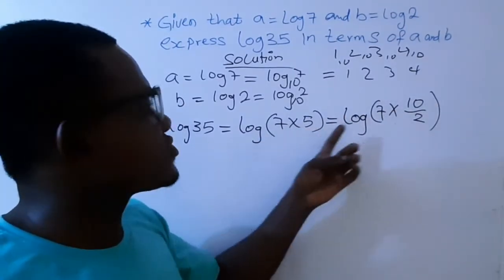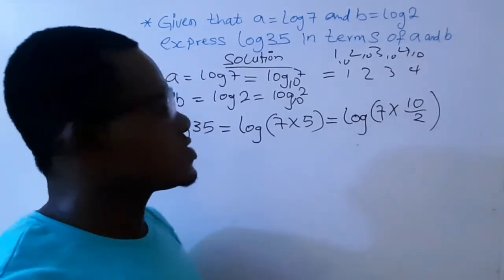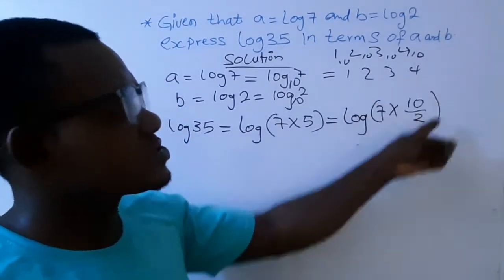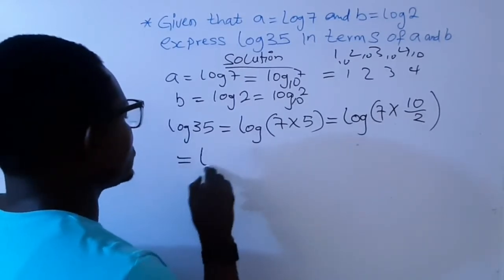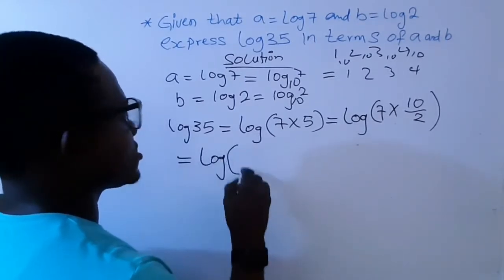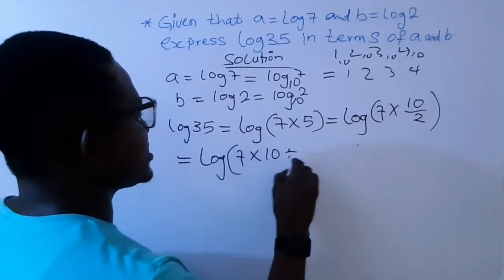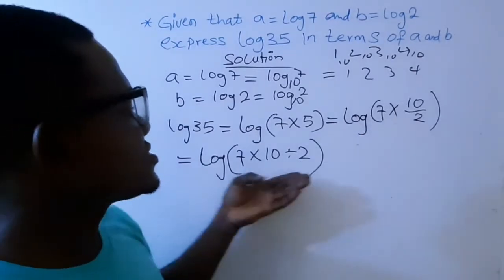Because in number, 7 multiplied by 10 divided by 2, so that will give us 5. So if you see 7 times 10 divided by 2, so that will give us 35. Now we can now write this by saying equals to log 7 times 10 divided by 2. So I'll just transfer this to this.